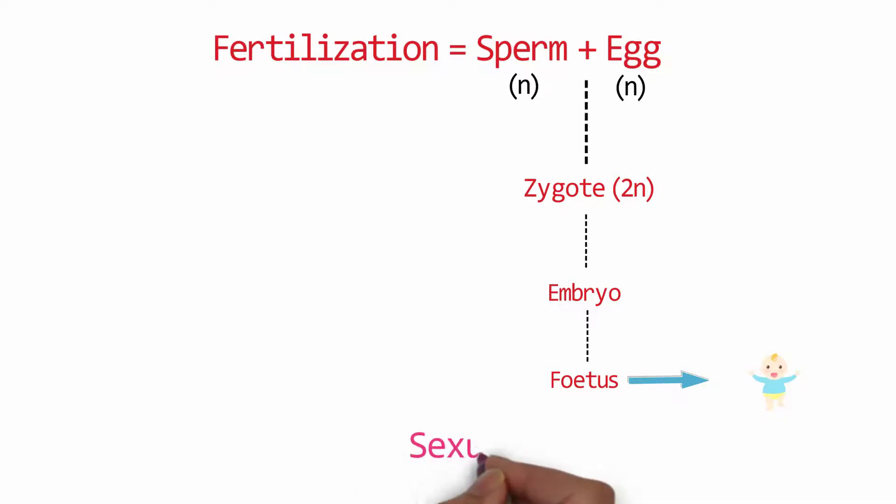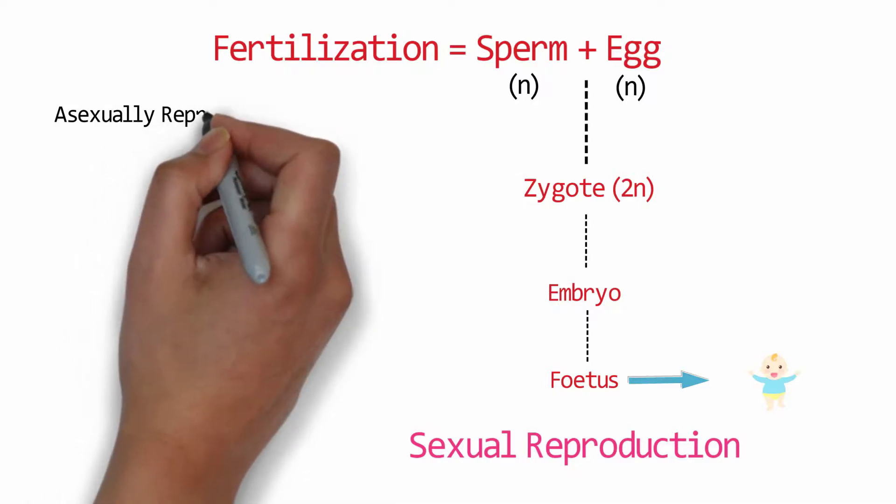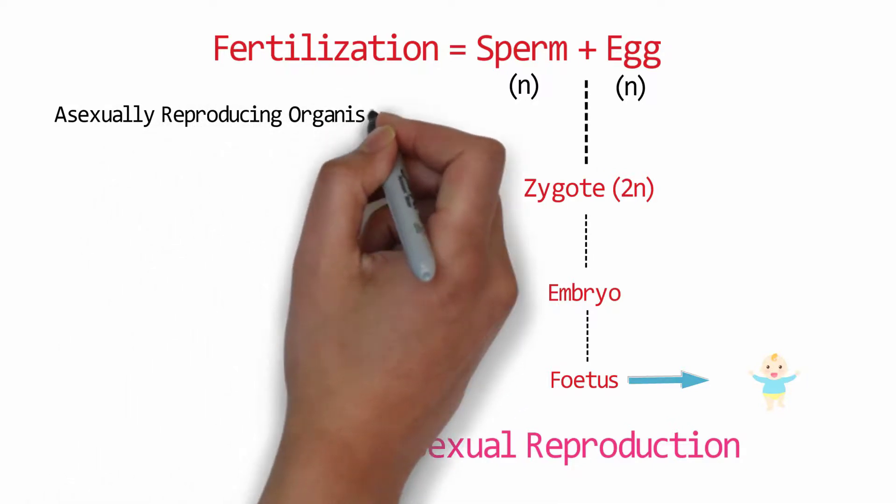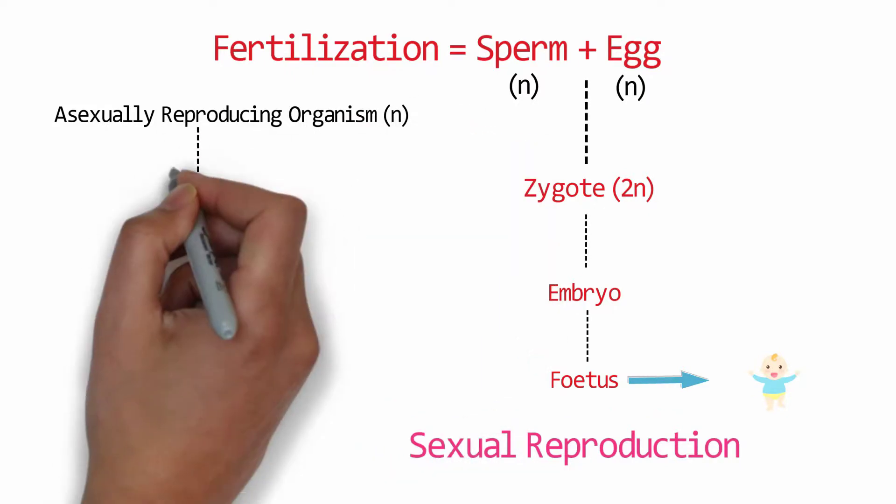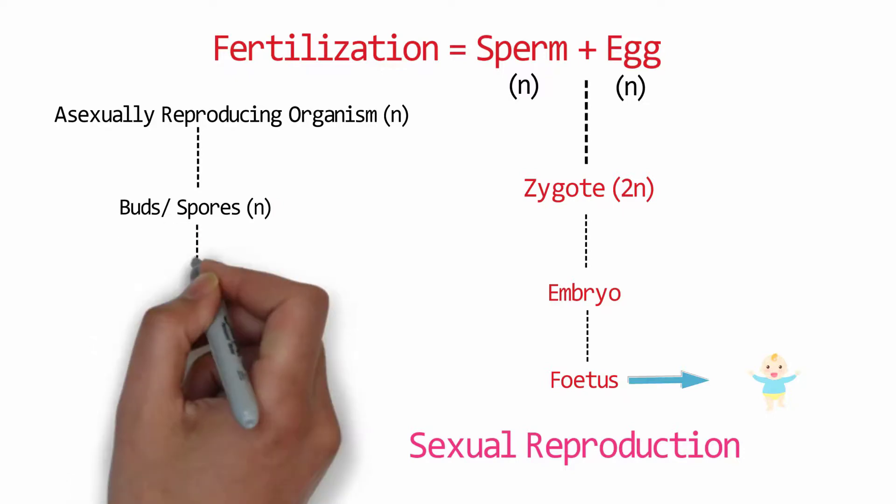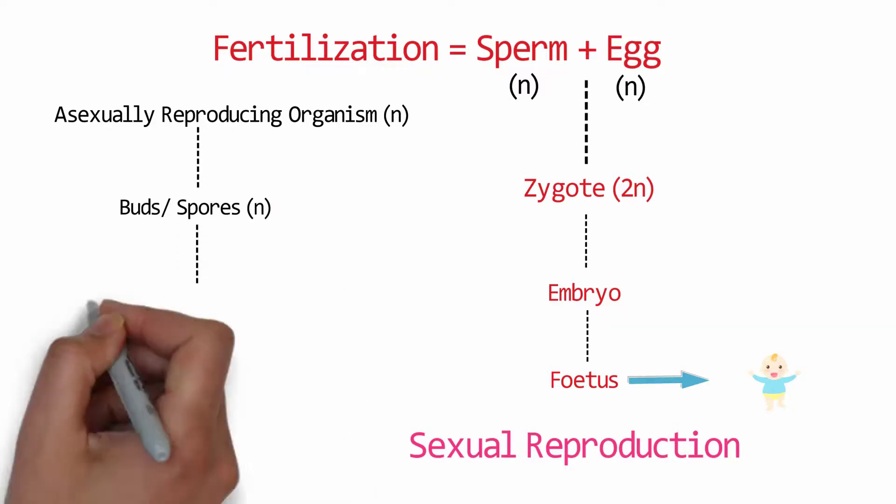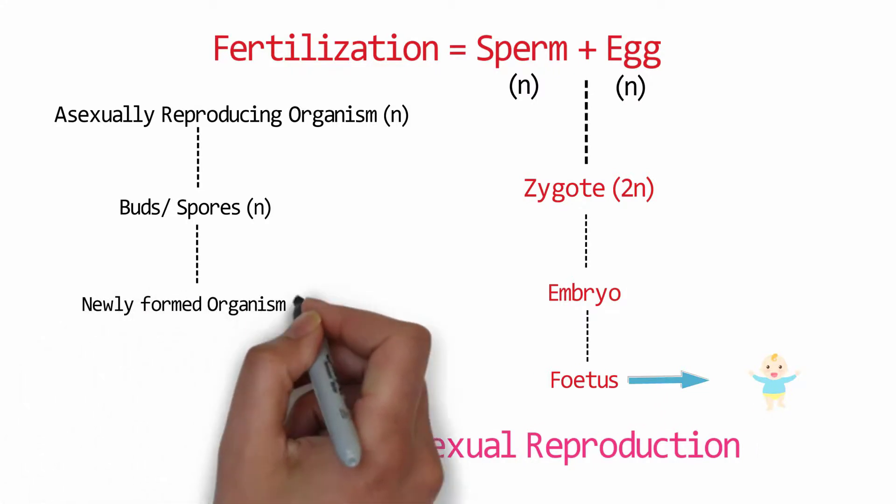Now this was all about sexual reproduction. Now let's see asexual reproduction. In asexual reproduction there is no fusion of gametes. Hence, buds or spores that are haploid in number but do not fuse together result into another newly formed organism which is again haploid in number.